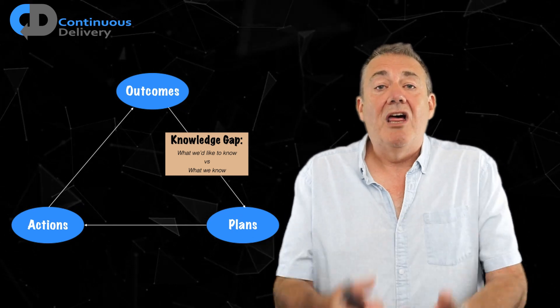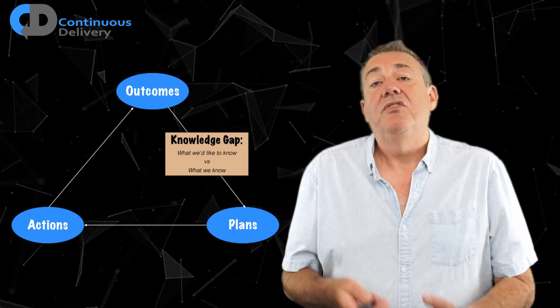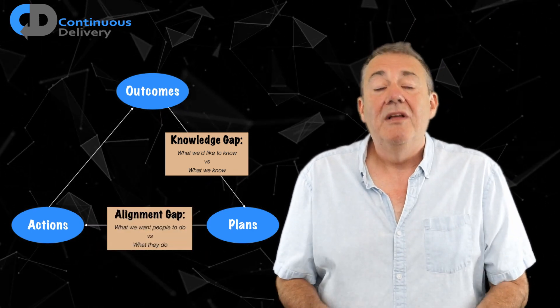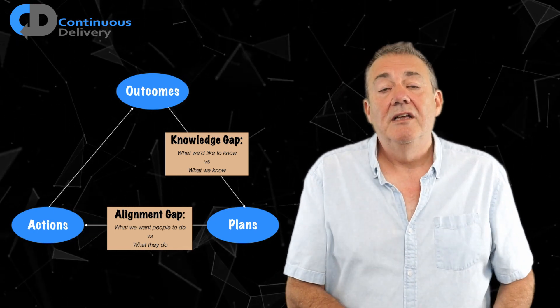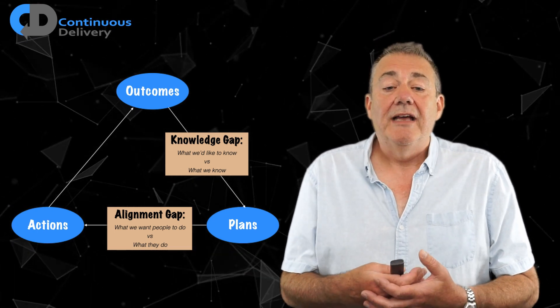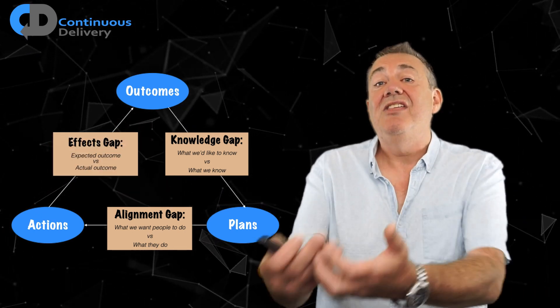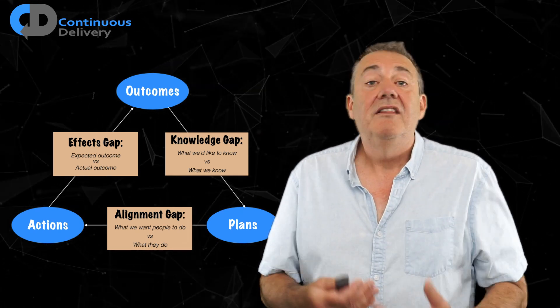The gap between outcomes and plans is the knowledge gap - what we'd like to know versus what we really know. The gap between plans and actions is the alignment gap - what we'd like people to do versus what they really do. And the gap between actions and outcomes is the effects gap - what we think the outcome is going to be versus what the actual outcome is.